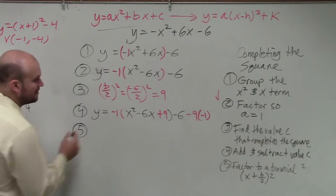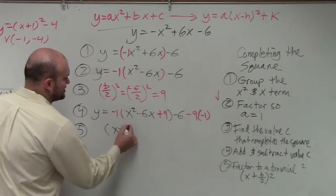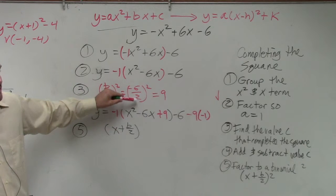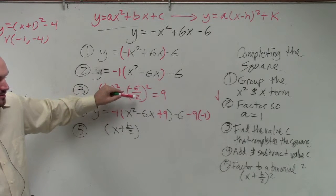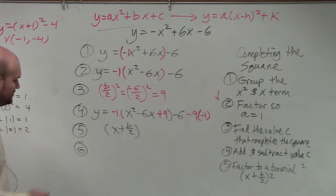Step number 5. Write it as a binomial squared. So x plus b divided by 2. So let's look at our b divided by 2. Negative 6 divided by 2 is negative 3.